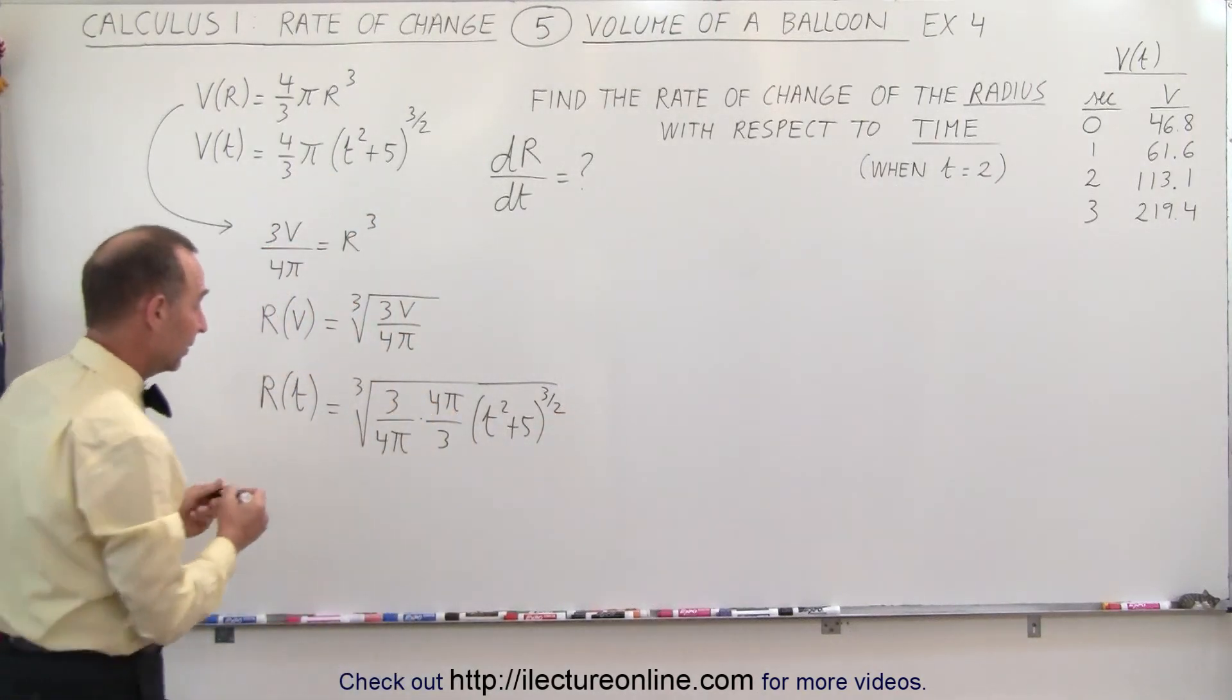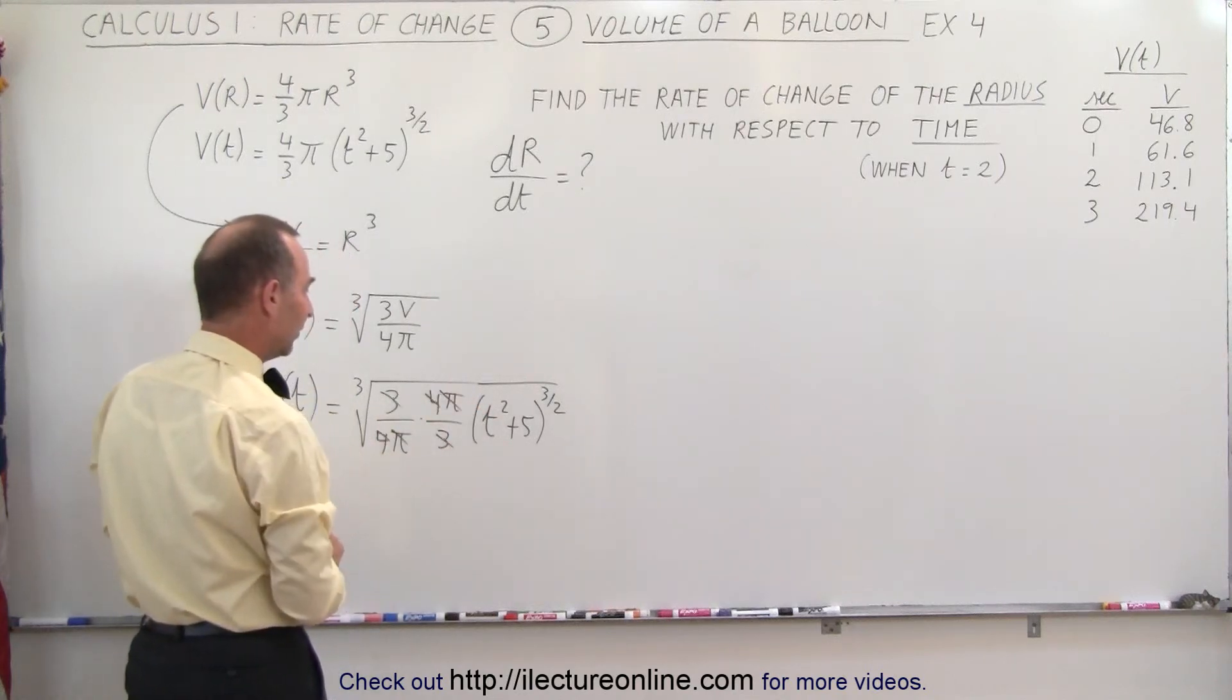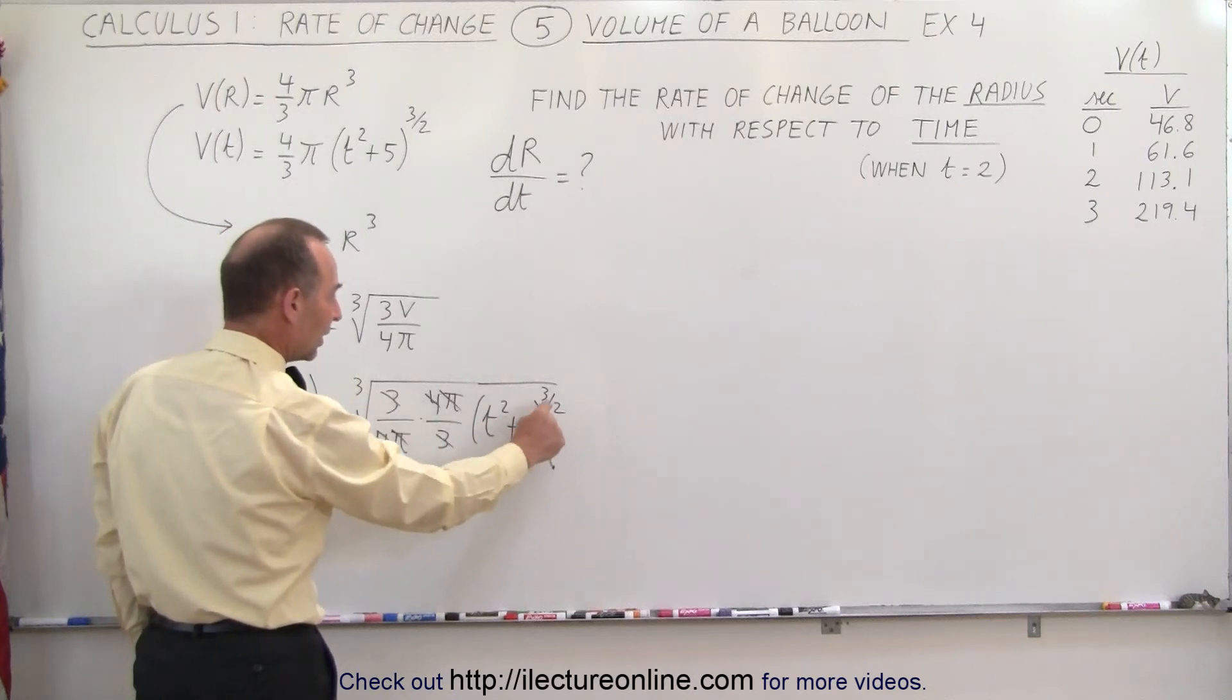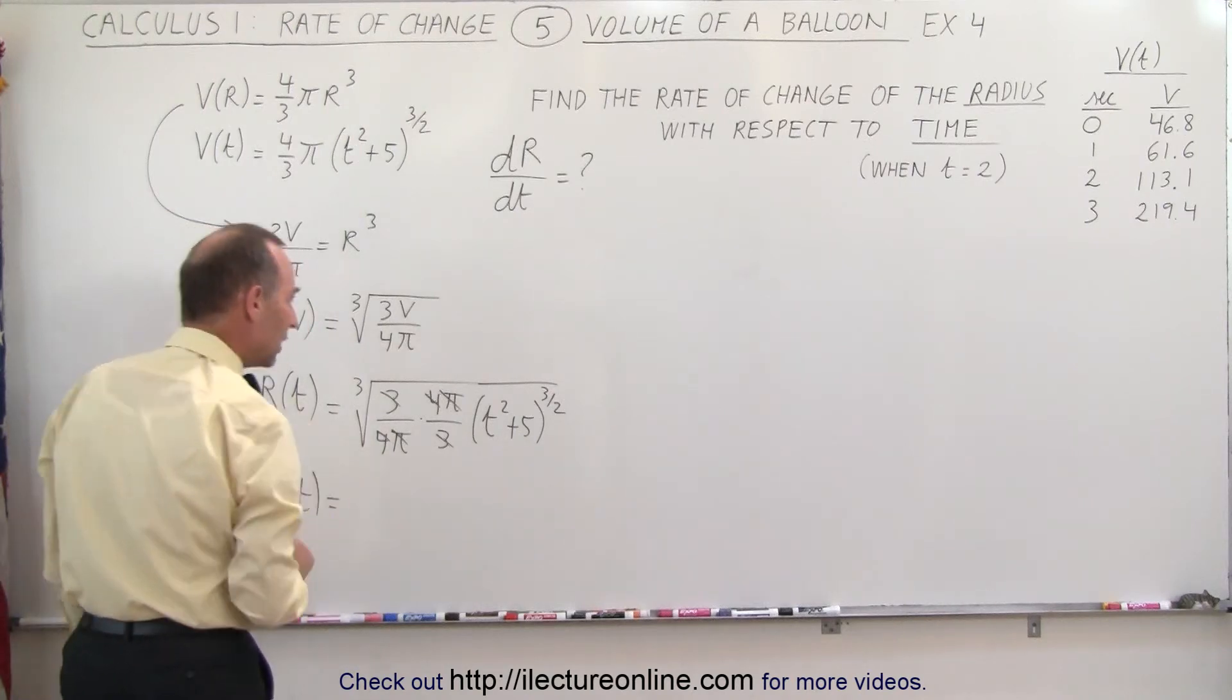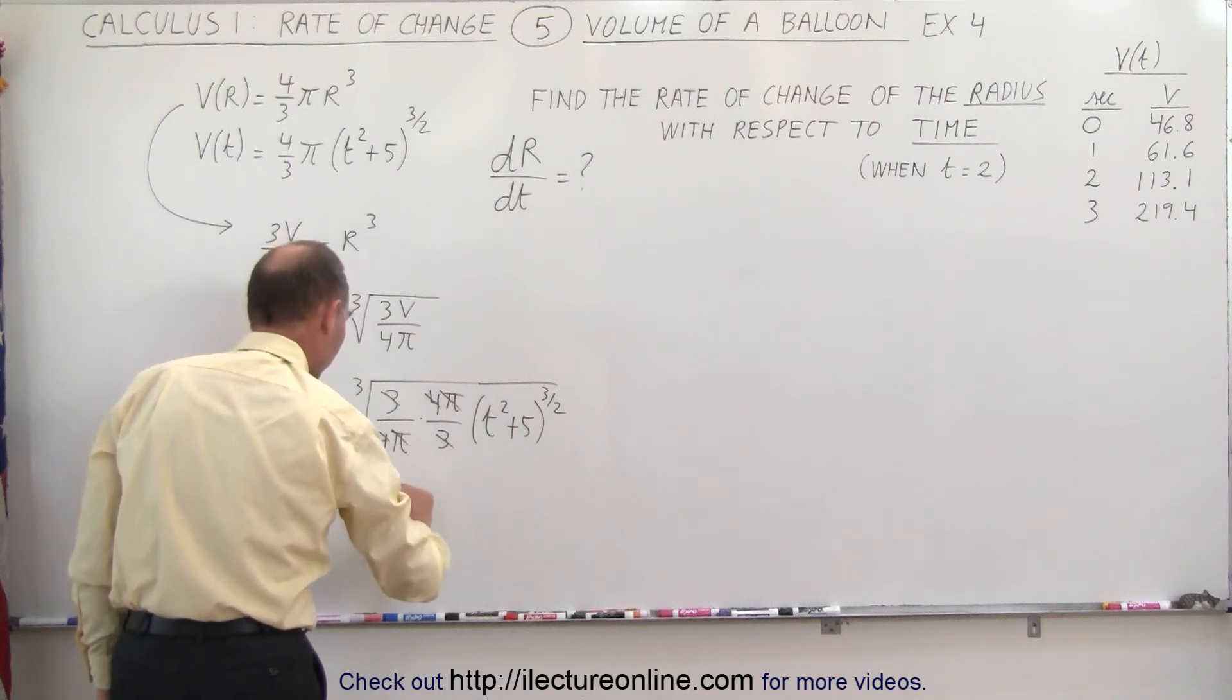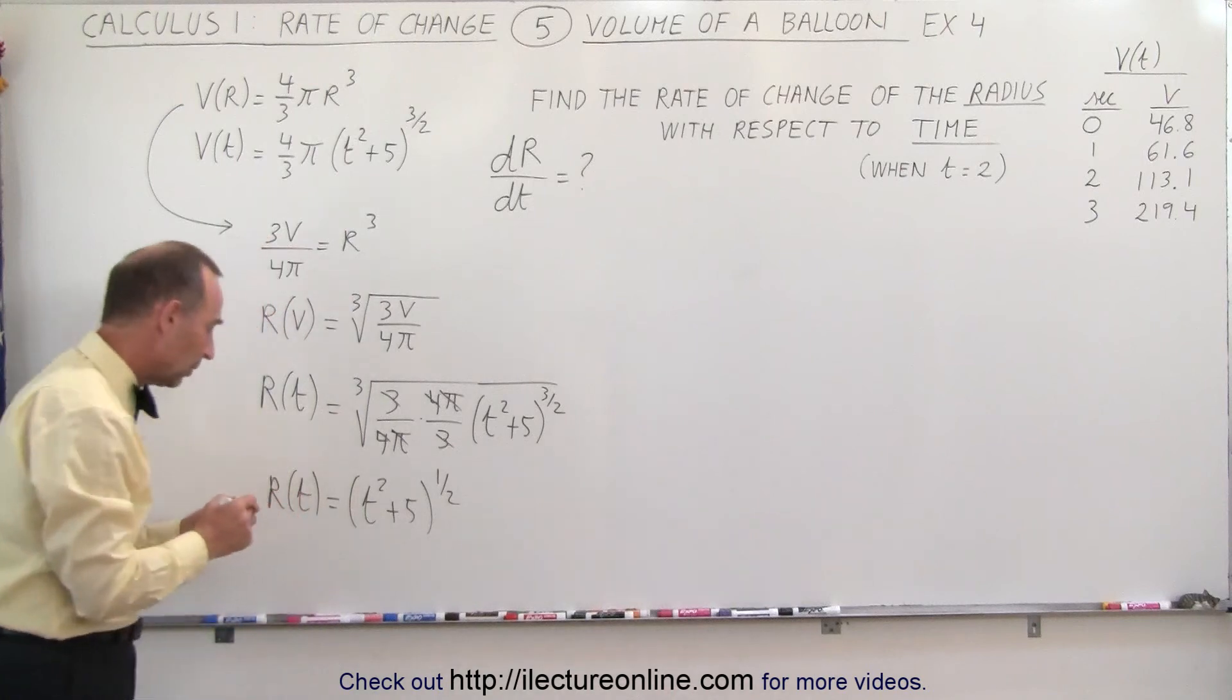Okay, now we can simplify that a little bit. Okay, we have the 3, that cancels out, the 4, the π, that's kind of nice. And now, the cube root of this quantity to the third power, and then the square root of that. So that means that the radius as a function of time is going to be equal to the square root, which is (t² + 5) to the 1/2 power, the square root of that.